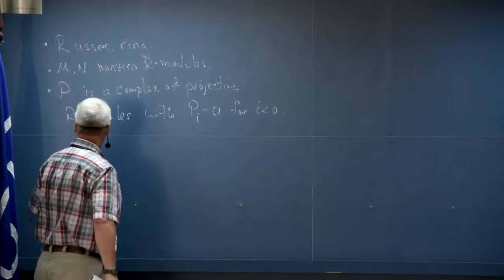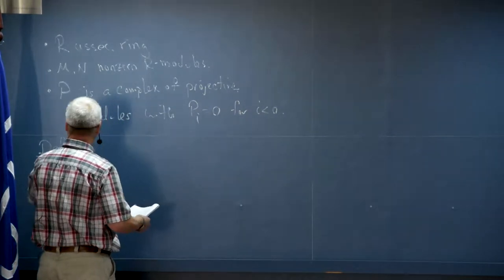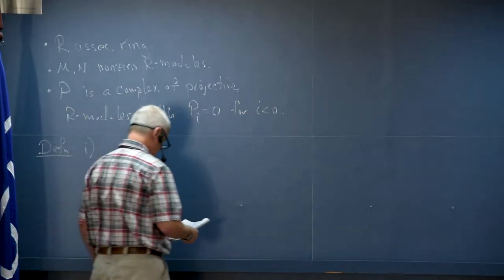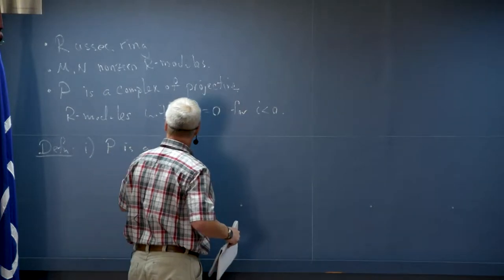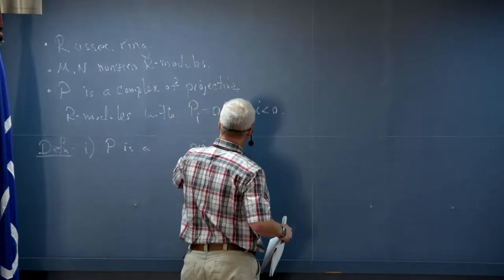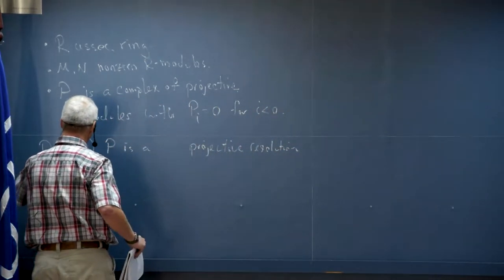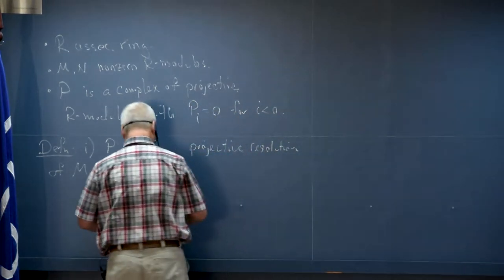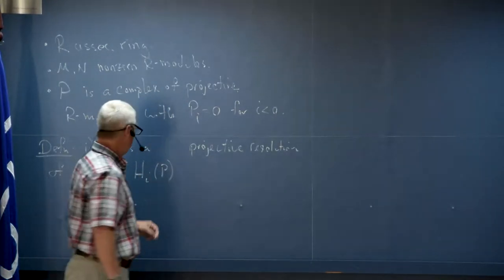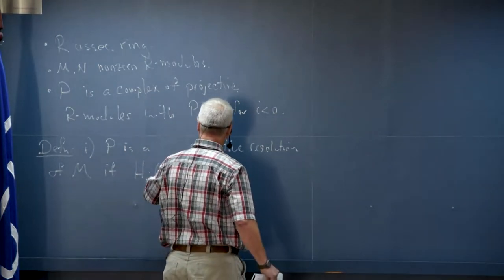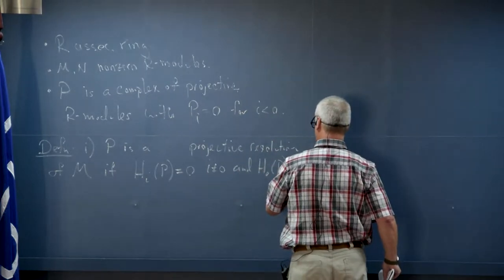Let me start off with a two-part definition. First off, we say that P is a projective resolution of an R-module M if the homology of P is zero for i different from zero, and the zeroth homology of P is M.